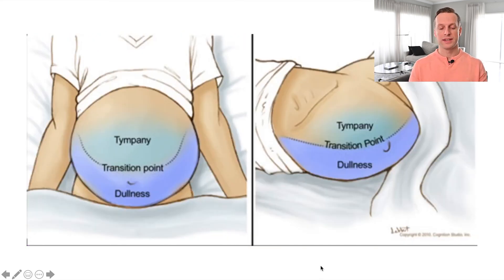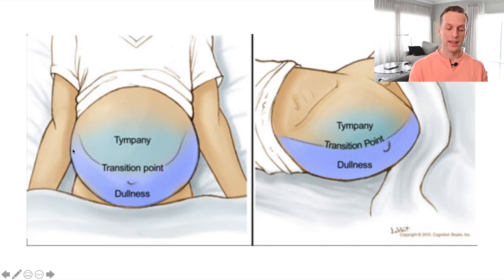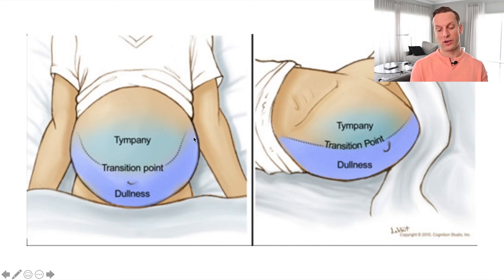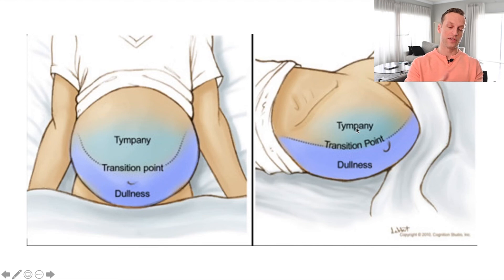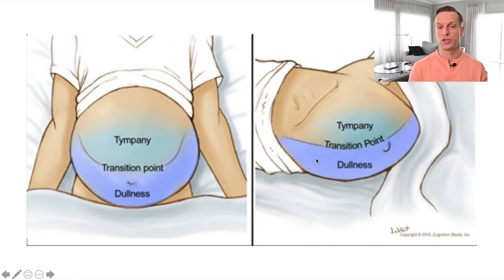This slide shows an example of shifting dullness. In the center there's a tympanic area where percussing identifies a tympanic sound, with a transition point to an area of dullness — the flanks are dull. When you roll the patient onto their side, the transition point becomes more lateral, becoming tympanic on the lateral side as the fluid shifts with the patient's position. That feature won't be present in a bowel obstruction — bowel obstructions will be tympanic throughout, remaining tympanic when rolling the patient because there's no fluid shift.